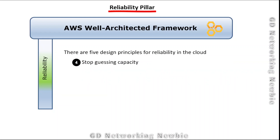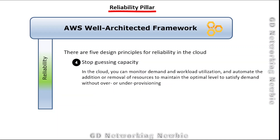Stop guessing capacity: in the cloud you can monitor demand and workload utilization and automate the addition or removal of resources. We should not be static in deploying resources — we can monitor our demands and, as per demand, increase or decrease resources to maintain the optimal level without over- or under-provisioning. For example, we can increase or decrease the number of EC2 instances or storage as needed.